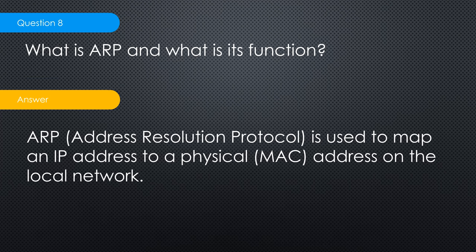Eighth question: what is ARP and what is its function? ARP, or Address Resolution Protocol, is used to map an IP address to a physical MAC address on the local network. You can run the ARP command in CMD to see all connected MAC addresses. This is very useful in networking — for example, instead of walking across a large building to physically check a device, if you know its MAC address from your documentation you can verify connectivity remotely.